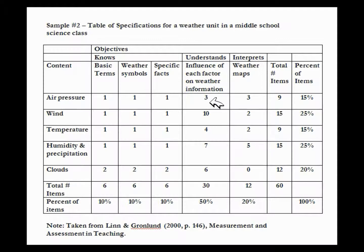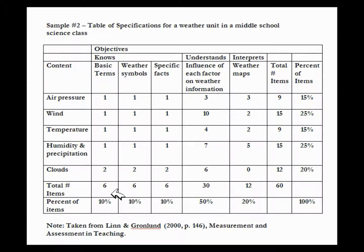Under each of these different areas, we have specified content. One important point: the more items you have in a specific area, the more reliable your results. There are six items on basic terms, six on weather symbols, and 30 on the influence of each factor on weather information. The level of reliability or accuracy in a test is directly related to the number of items in each section. You need a minimum of at least six or seven questions per content area or category in order to get a reliable score.